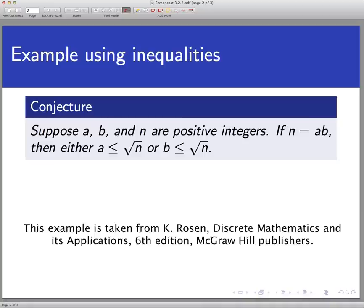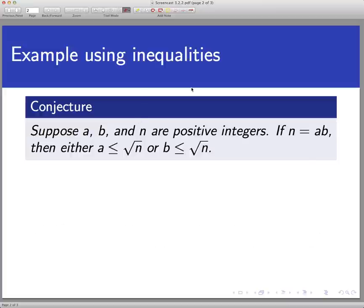And here's the statement we're going to play with this time. So suppose a, b, and n are all positive integers. And we're going to prove that if n equals a times b, then either a is less than or equal to the square root of n or b is less than or equal to the square root of n.